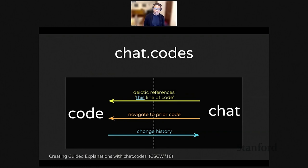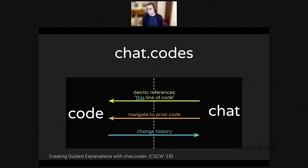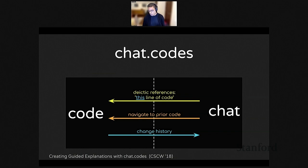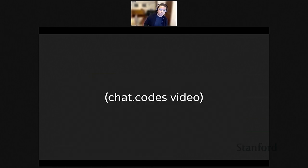ChatCodes combines these three features: deictic code references, version-linked references, and inline change history. One nice thing about the feature design is that they don't interfere with the core functionality of other code discussion tools, and as our user studies show, they add very little complexity to the user's experience — they're extra features you can use if you want, but if you don't, they don't get in your way.